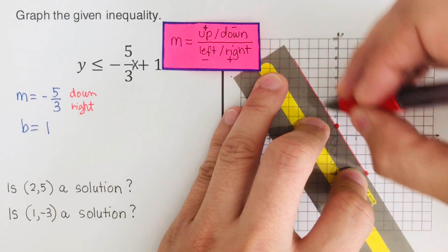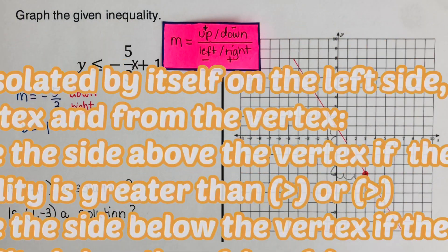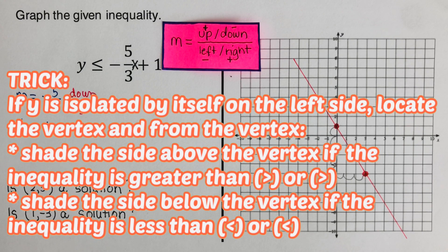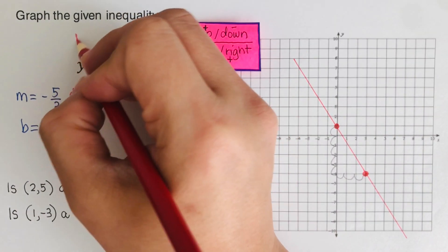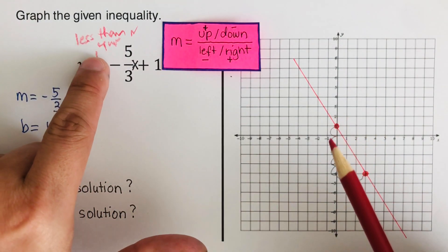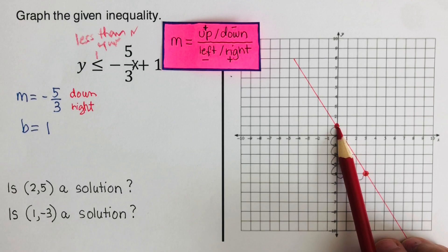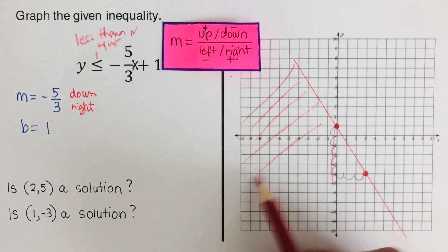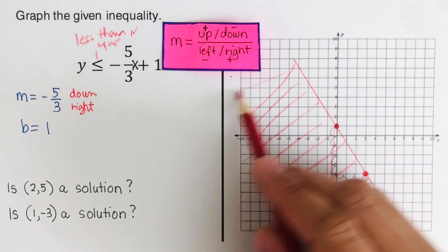Since this inequality has a bar underneath, I use a solid line. Now for shading: the inequality is less than or equal to, so we shade the side below the y-intercept. Below this point means we shade this part of the graph.